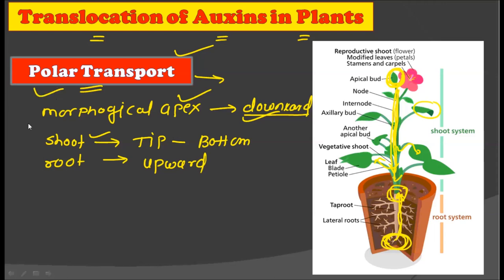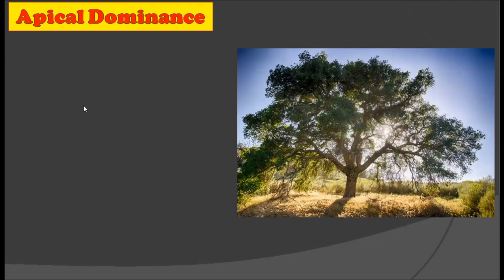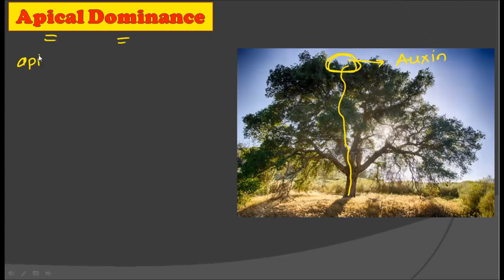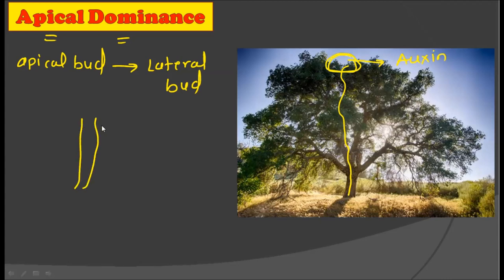This typical translocation is called polar transport. Now there is a concept of apical dominance in plants, and auxin is quite responsible for it. As we have seen, the apex or tip areas are the prime sites for production of auxin, and due to polar transport this auxin moves downward. Apical dominance means when an apical bud is so dominating that it inhibits the lateral buds, resulting in growth only in the length of the plant and not the width.